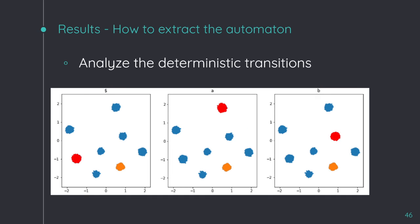Then, we have to analyze the deterministic transitions between the clusters. Here, I show you an example of the transition from the orange cluster to the others, with the three possible symbols, dollar, A, and B. Whenever the network is in the orange cluster, it always does the same transitions.